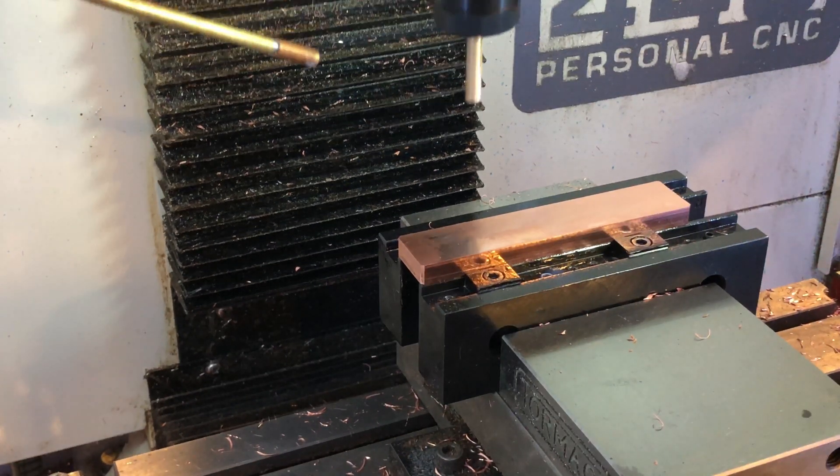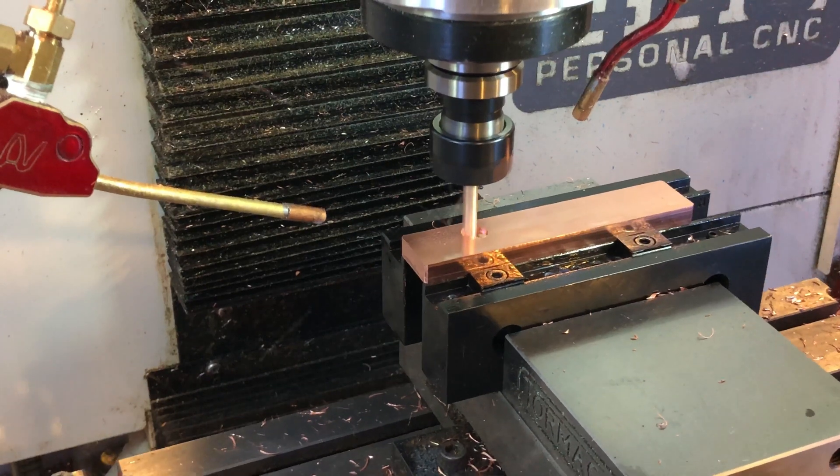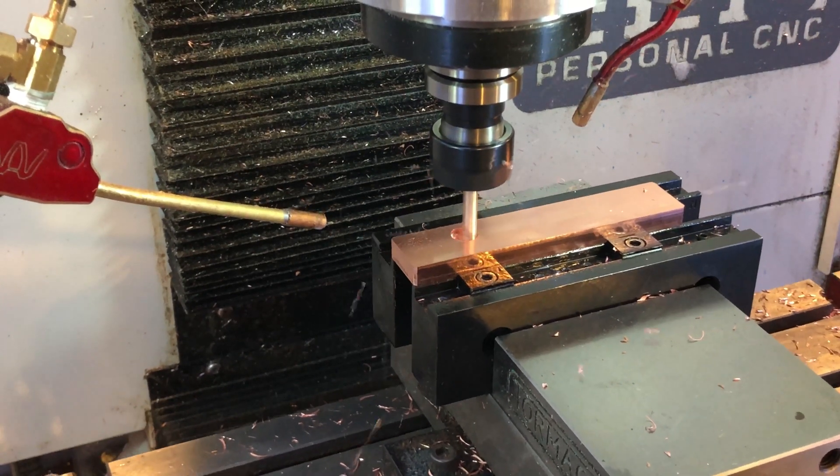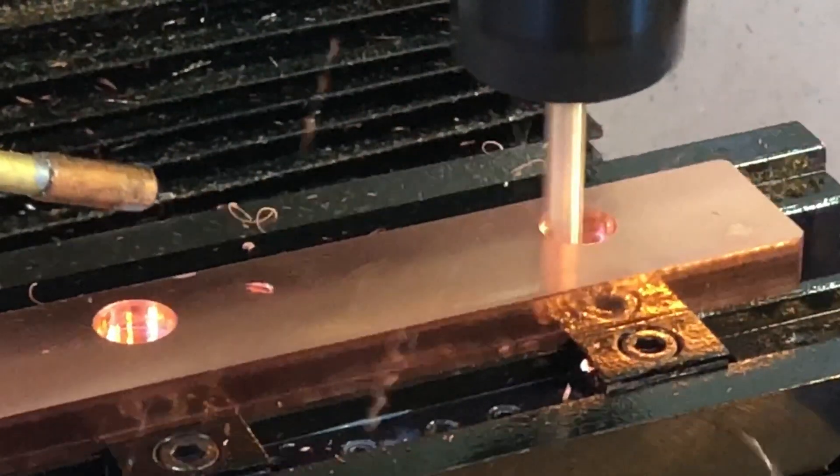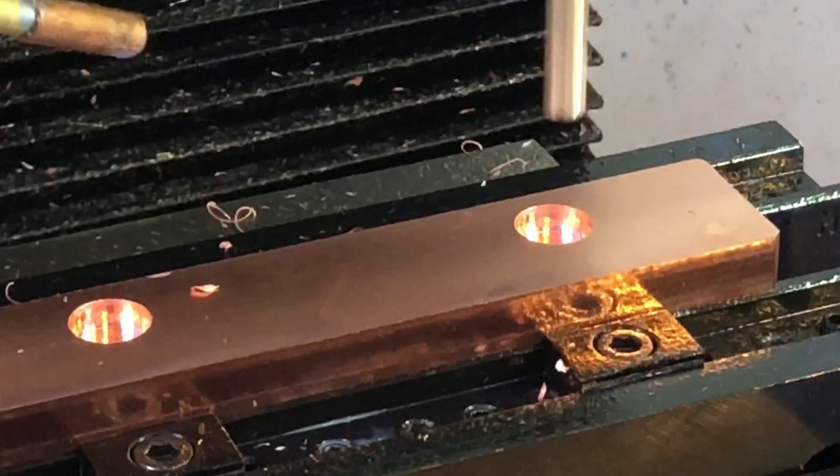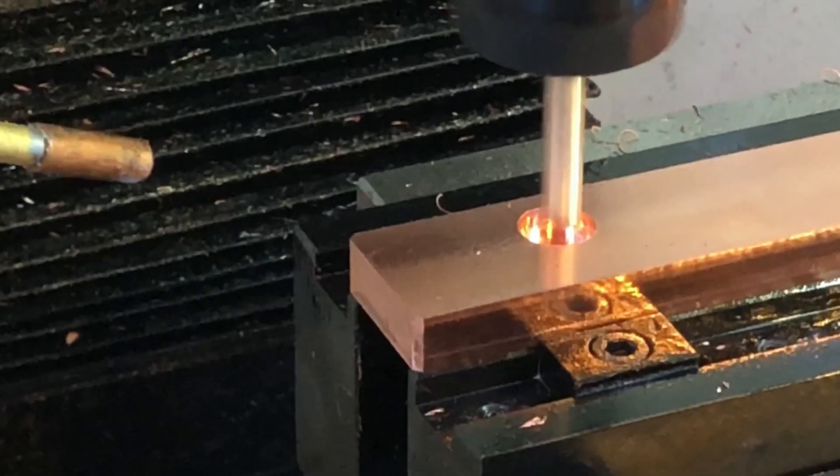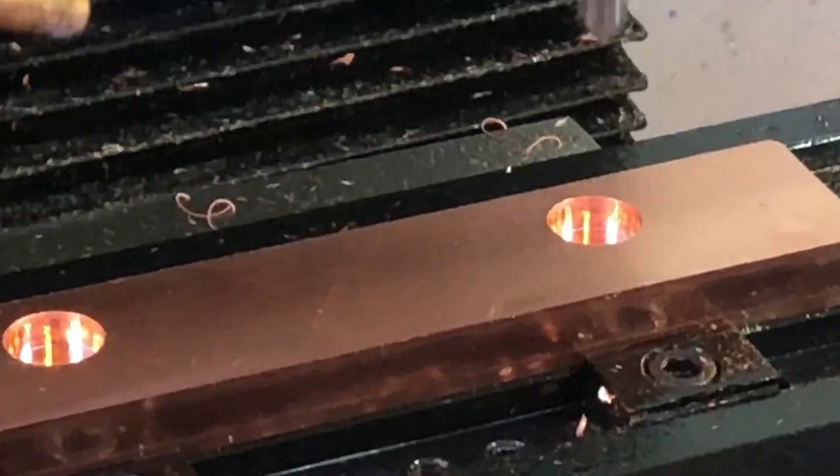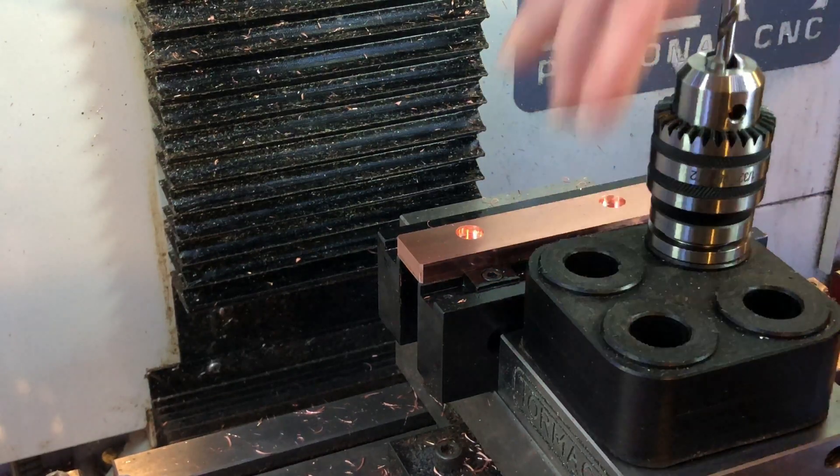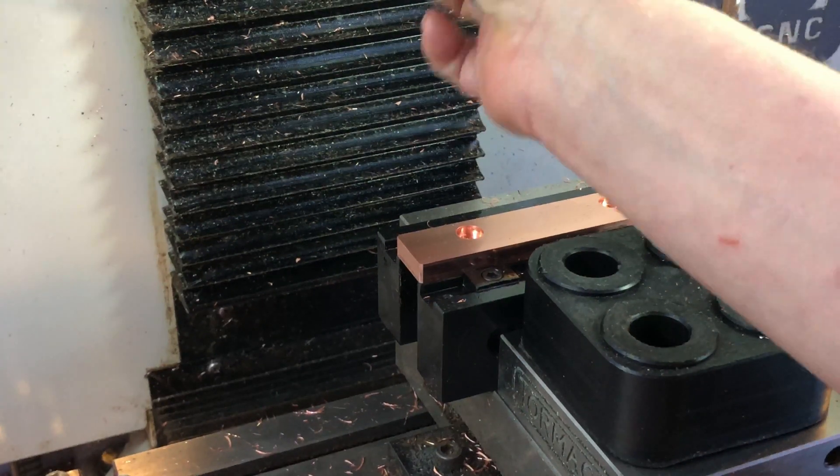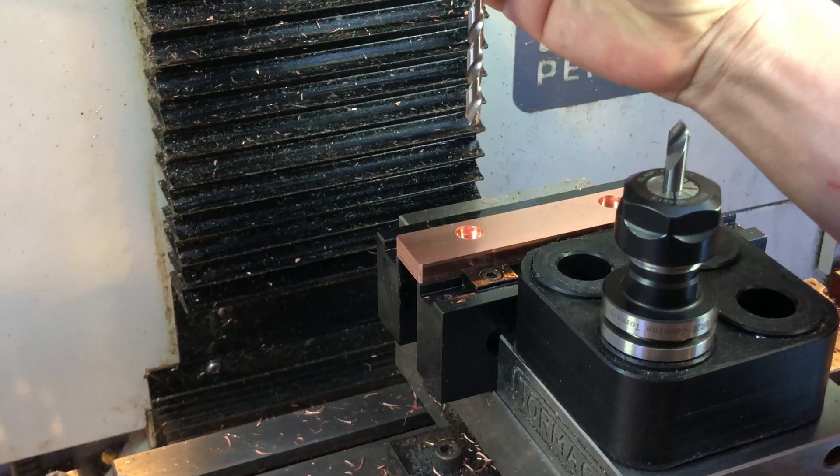Now we add the counterbore and the through holes. Look at those chips. Now we'll clean up about two thousandths of material with a 2D adaptive and spot drill.